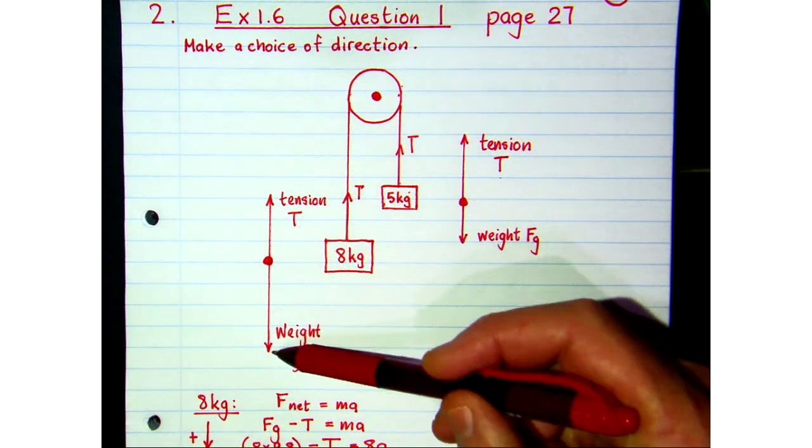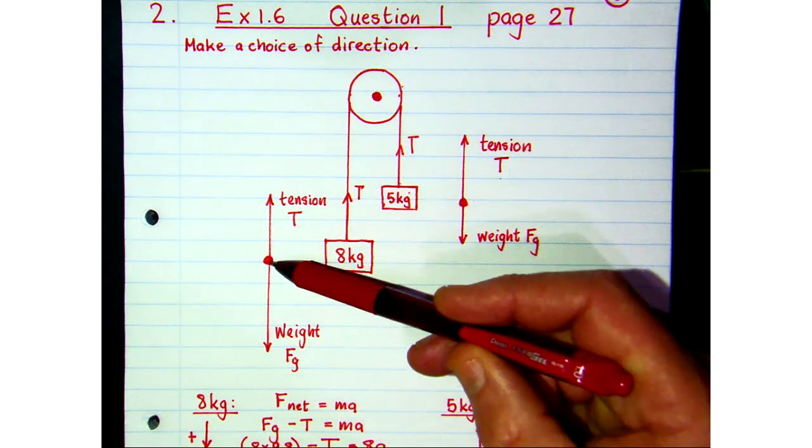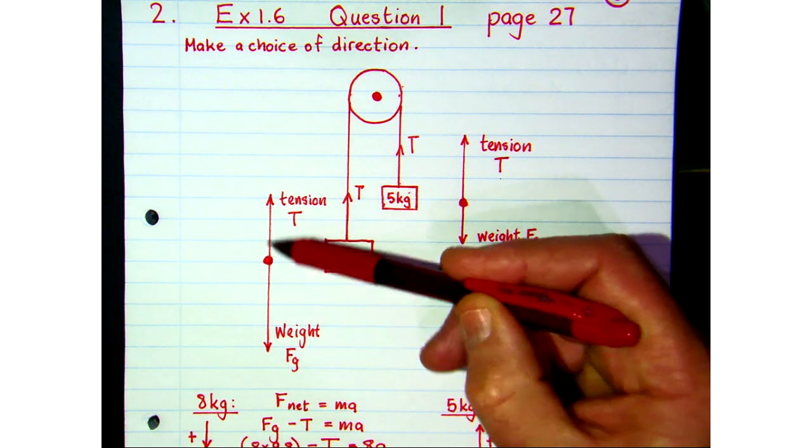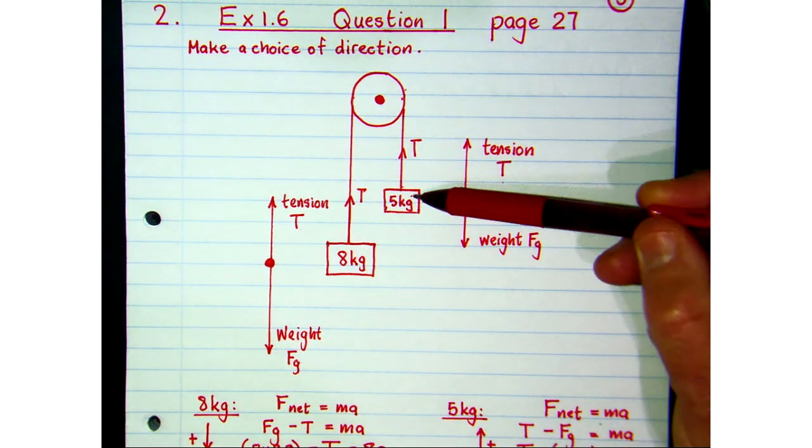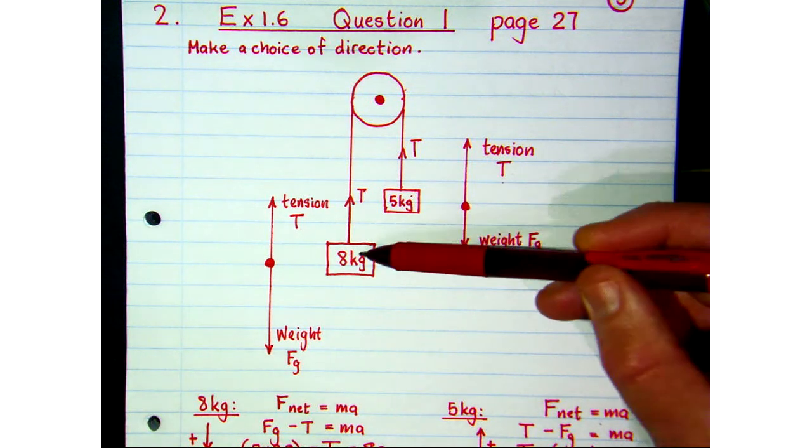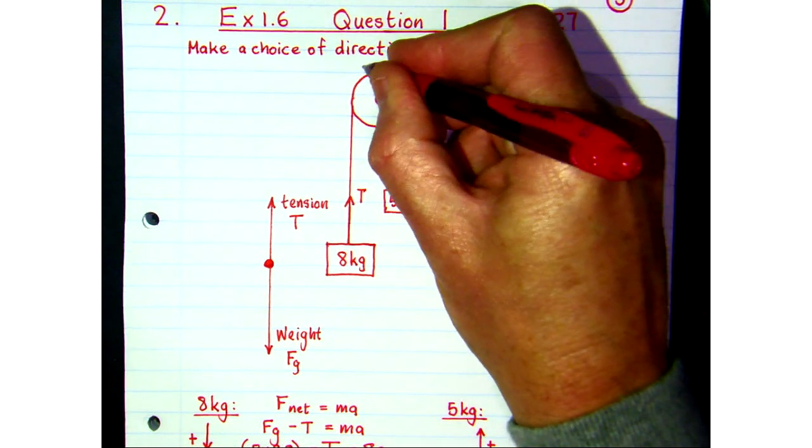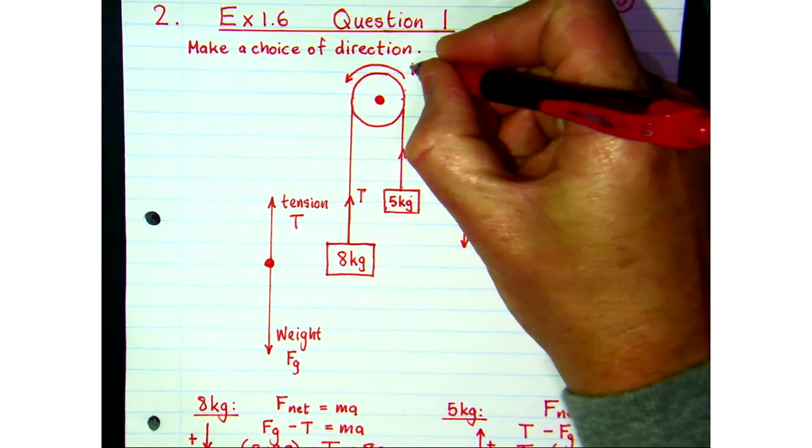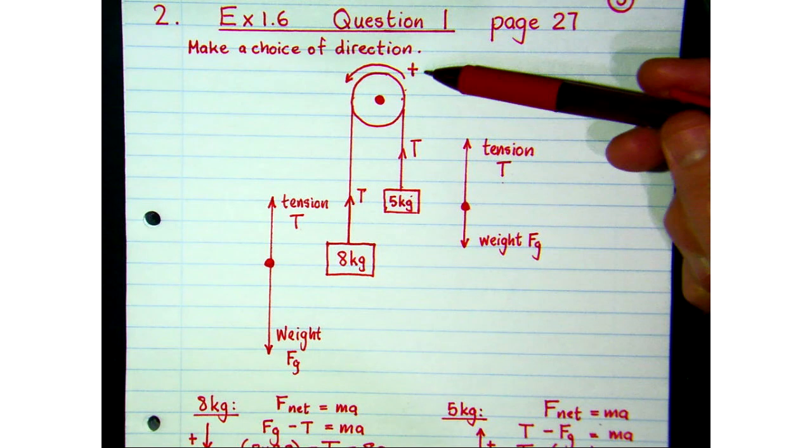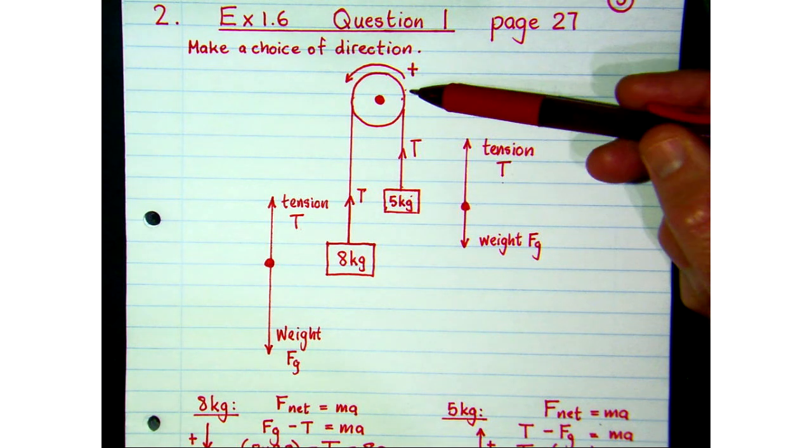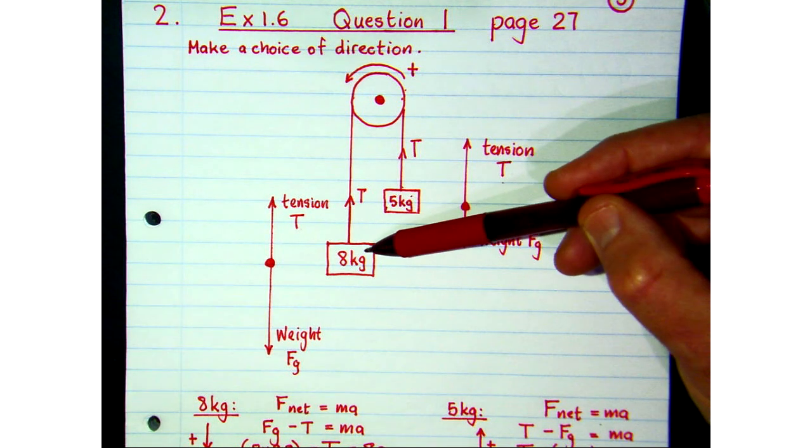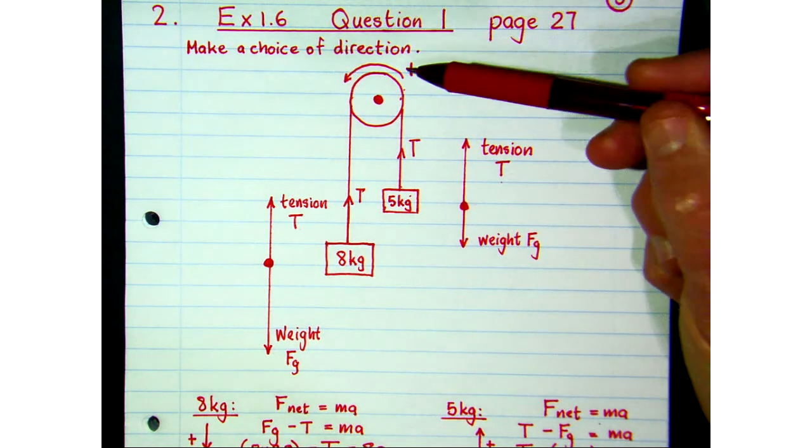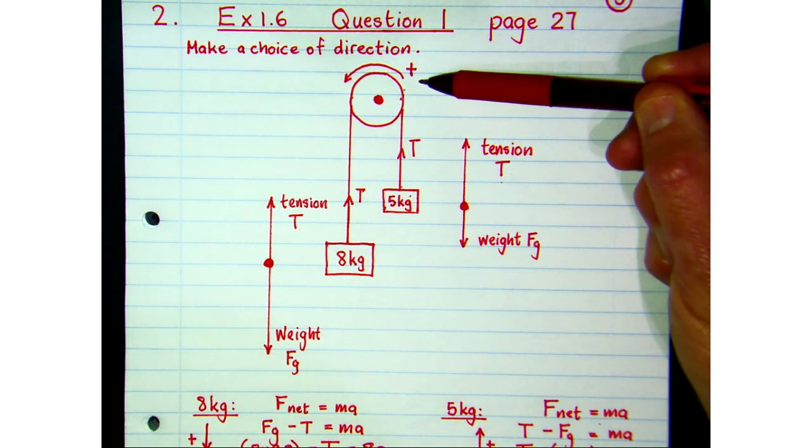But the weights are different. The weight of each block is different. So on the left hand side here, I've got the weight of the 8 kg block is bigger than the upward tension force. Because I can see that the system, because this is 5 kgs and that's 8 kgs, the system is going to accelerate in an anti-clockwise direction around that pulley. And I'm going to make that direction positive. So that's one of the first steps you need to do when you're dealing with pulleys. Decide which way is the system going to accelerate, and it's obviously going to accelerate in the direction of the bigger mass, because that has the bigger weight.